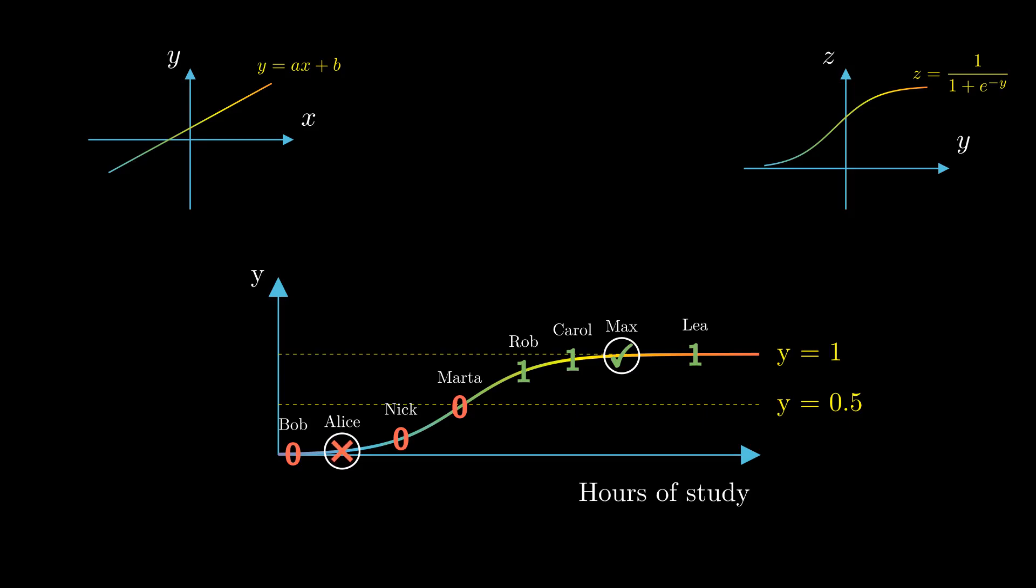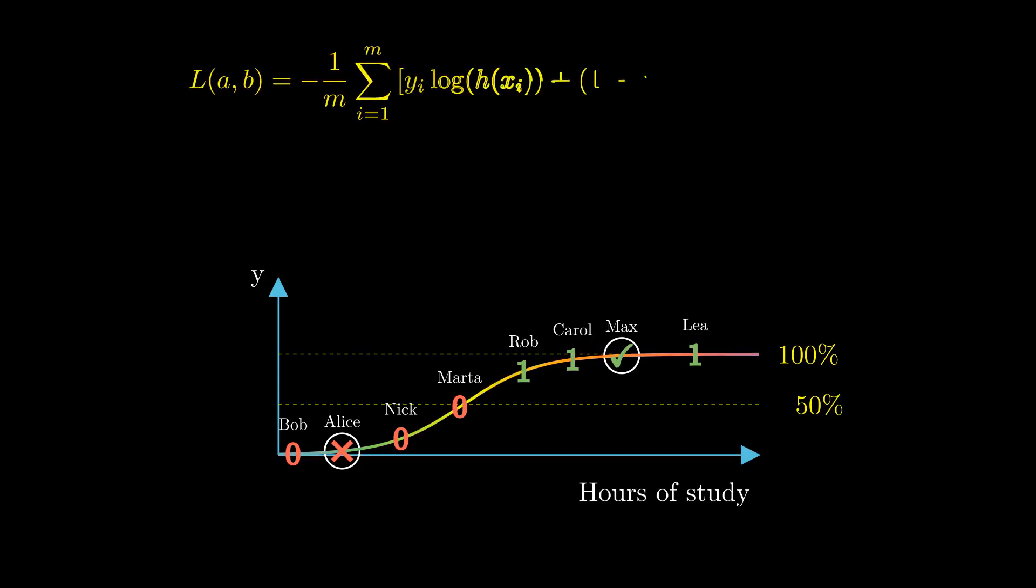This seemingly random cutoff has its roots in probability. We interpret the height as the probability that a student would pass the exam, with 0.5 corresponding to a 50% chance, and 1 meaning that we are certain the student will succeed. To find the best fitting curve, we would have to minimize something called a cost function.